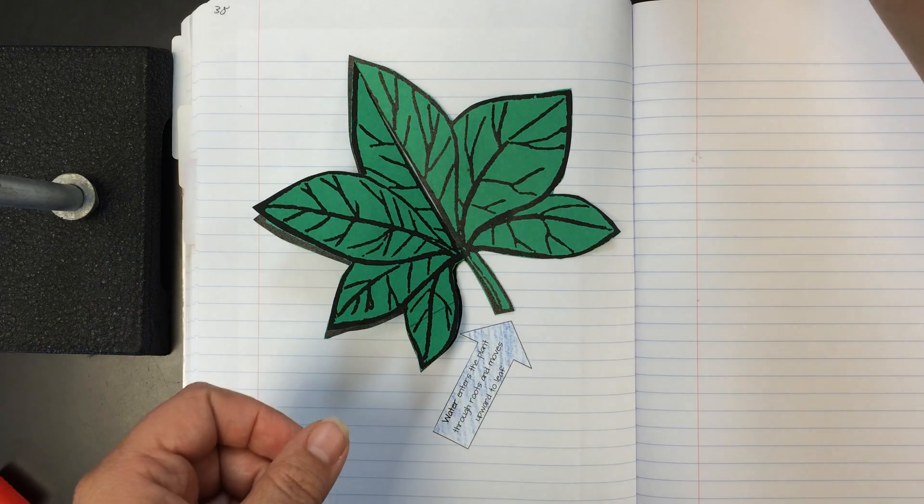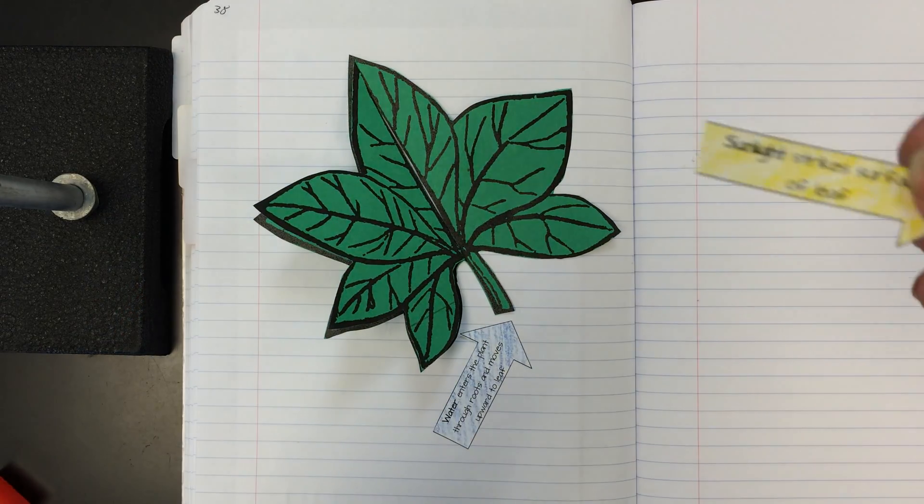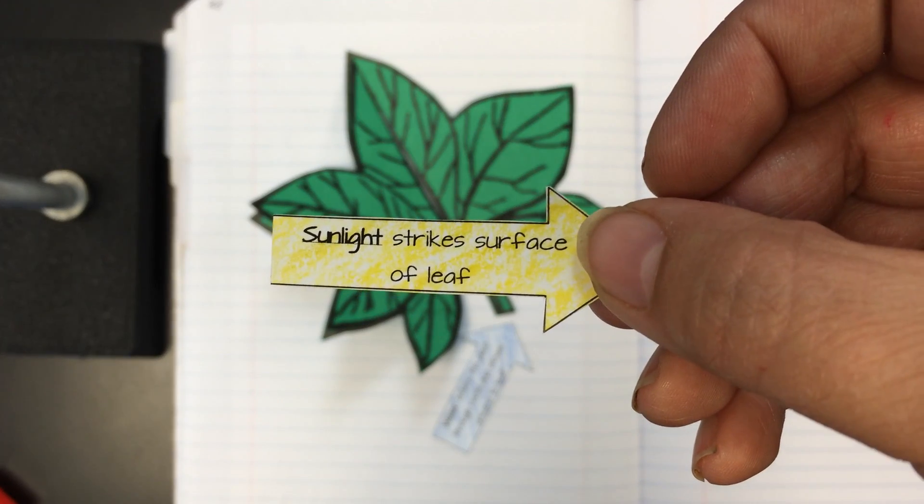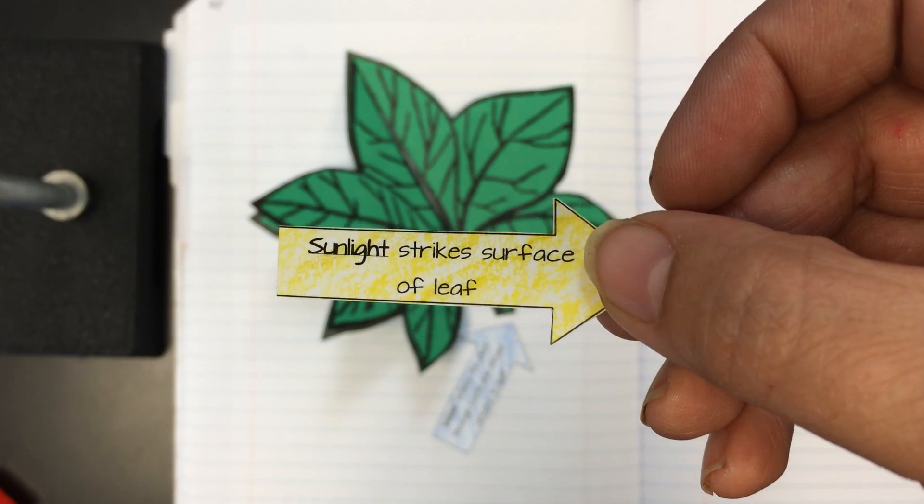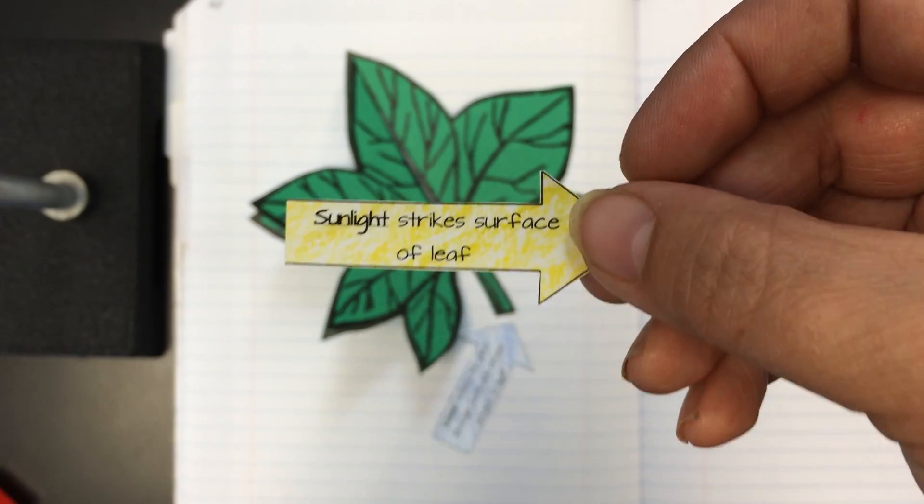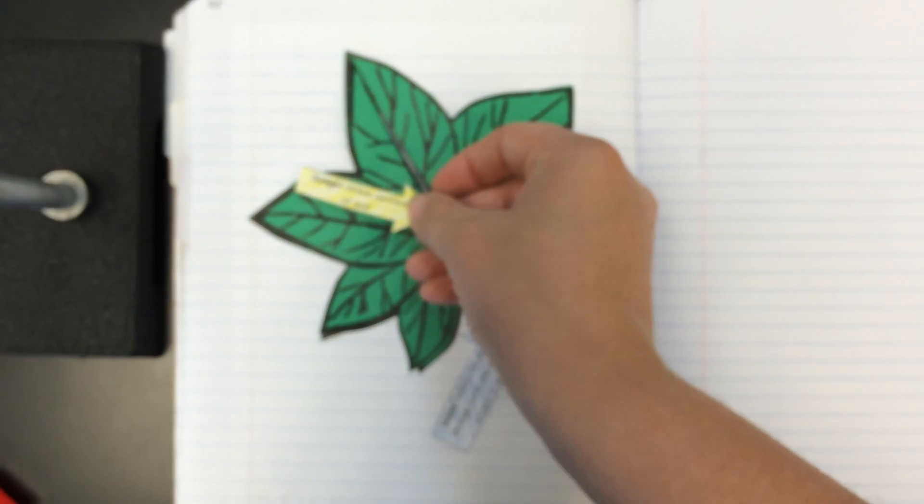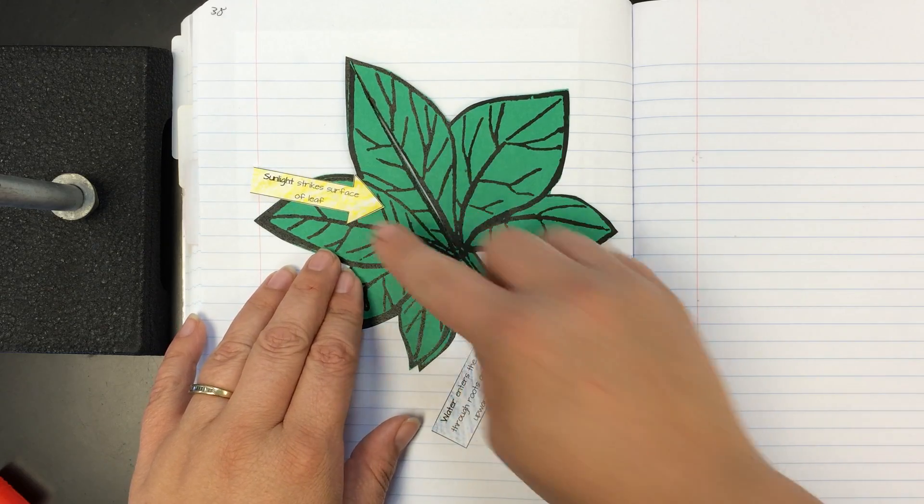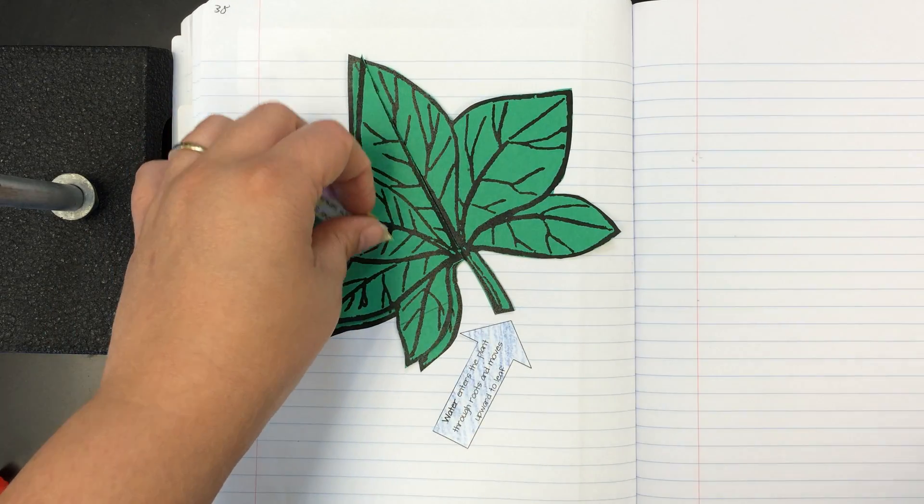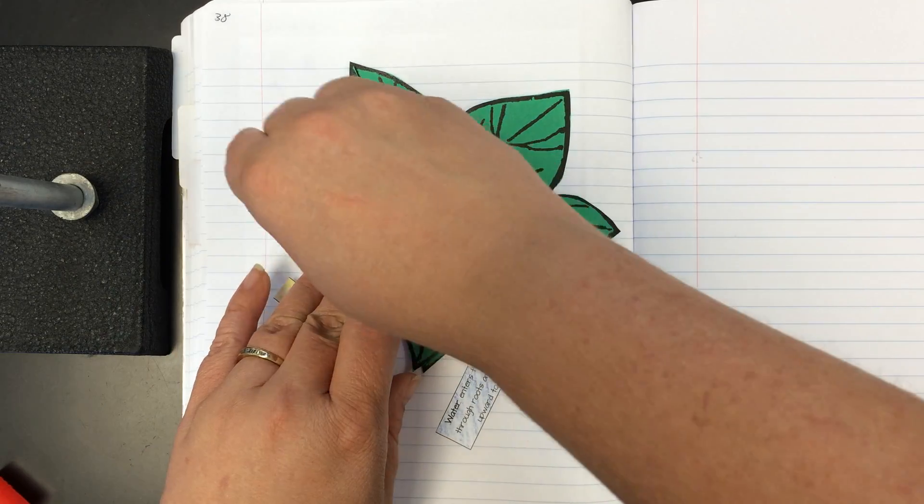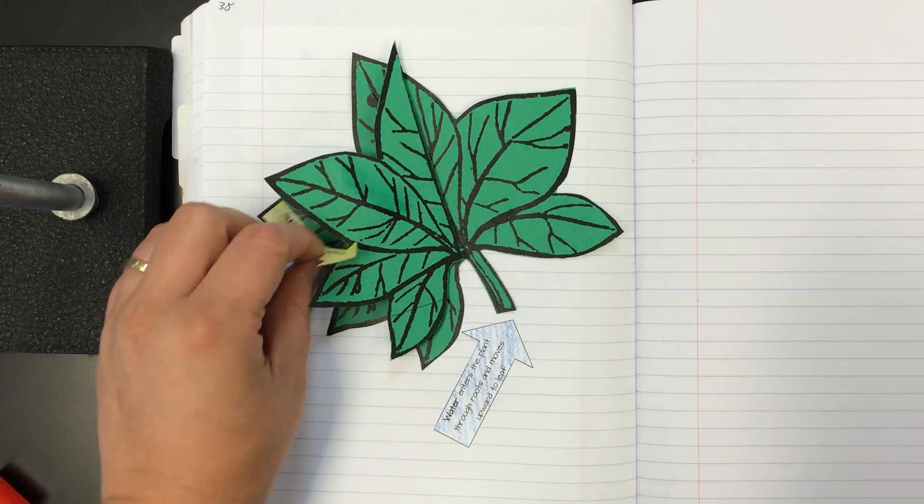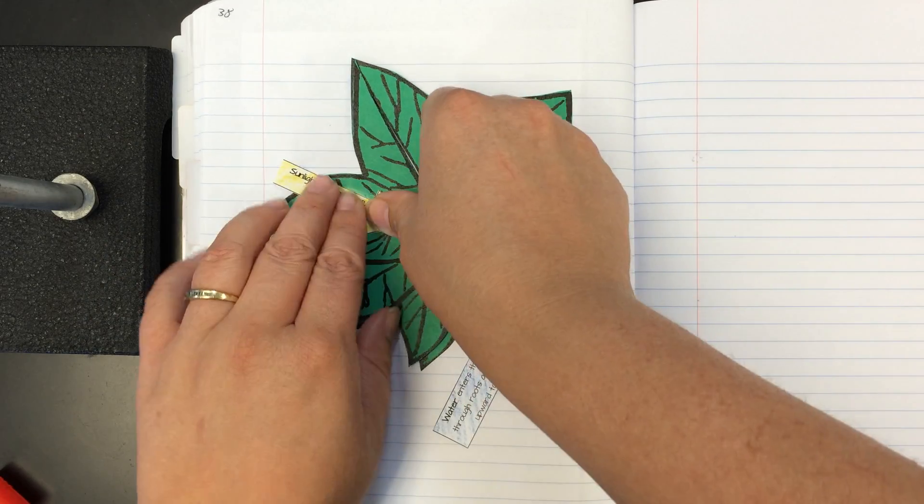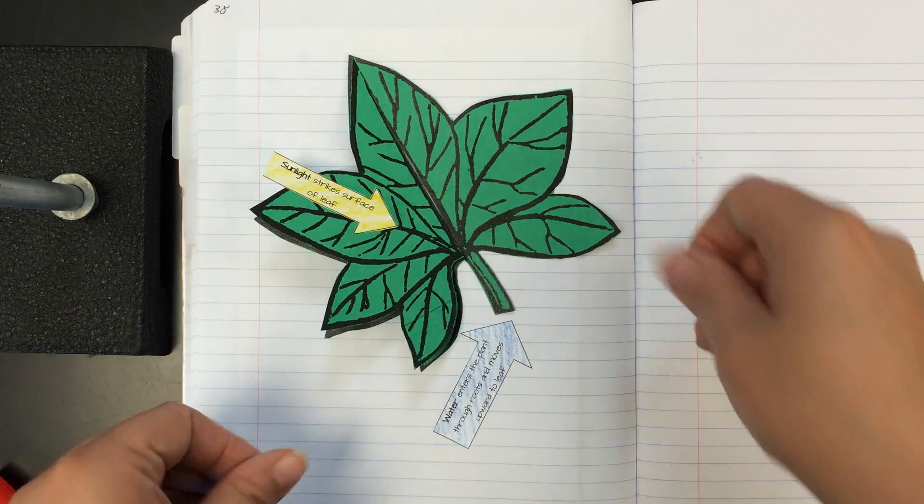Second, we're going to talk about plants all get their energy from sunshine. So sunlight strikes the surface of the leaf. So where's the surface of the leaf? It's the top of the leaf. So we're going to put our surface arrow onto the top. So you can put it on the top right or the top left, whichever. I'll just put it on the side because then it can float and look cool later. So the sun strikes the surface of our leaf.